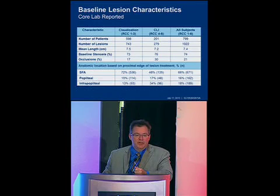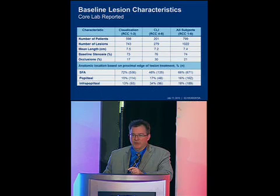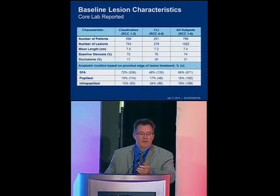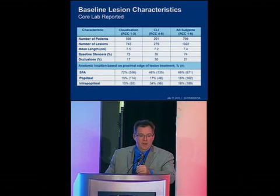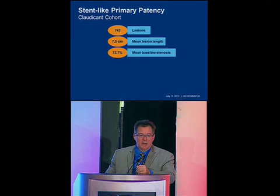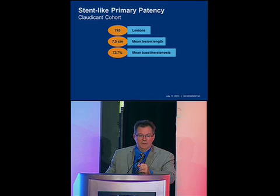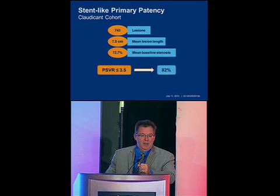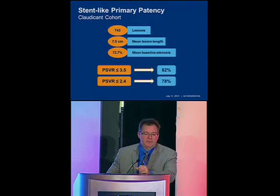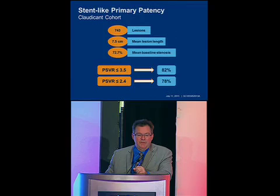Looking at baseline characteristics, critical limb patients usually are more frequently diabetic and have more comorbidities such as renal insufficiency, while claudicants are more commonly smokers. SFA disease is more common in claudicants; critical limb disease is usually below the knee. In the claudicant cohort, a total of 743 lesions from 600 patients had a mean length of 7.5 cm with baseline stenosis greater than 70%. Restenosis rates with PSVR less than 2.4 were 78%, which is the more common threshold in the literature.